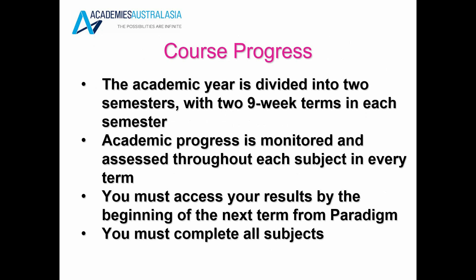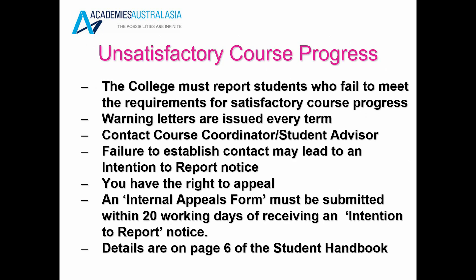Course progress: the academic year is divided into two semesters with two nine-week terms in each semester. Academic progress is monitored and assessed throughout each subject in every term. You must access your results by the beginning of the next term from Paradigm, and you must complete all subjects. Unsatisfactory course progress: the college must report students who fail to meet the requirements for satisfactory course progress. Warning letters are issued every term. You must contact course coordinators or student advisors, as failure to establish contact may lead to an intention to report notice.